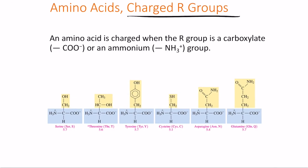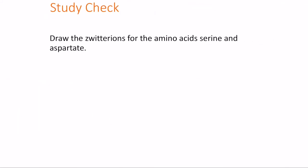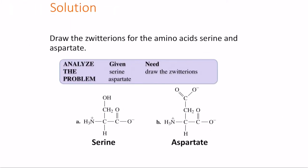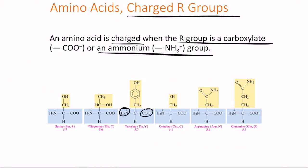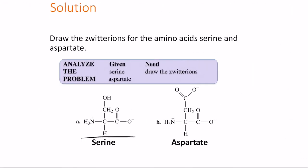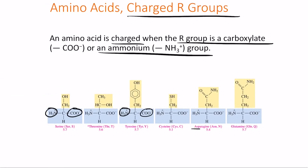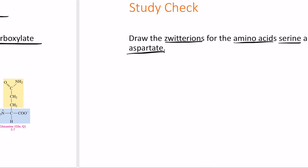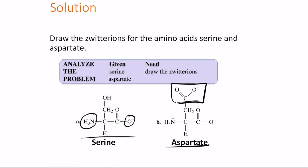An amino acid is charged when its R group is a carboxylate or ammonium ion group. To draw zwitterions, take the full amino acid structure and ensure the NH3+ is positive and the COO− is negative. For example, serine's zwitterion has NH3+ and COO−. Aspartate's zwitterion contains two COO− groups and one NH3+ group, giving it an overall negative charge at physiological pH.